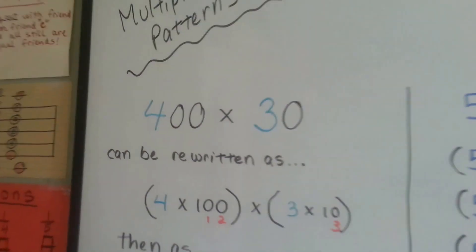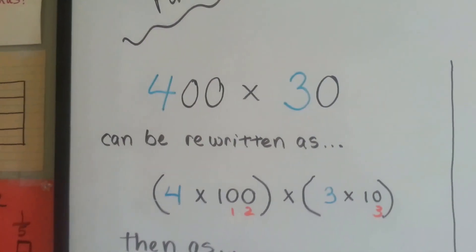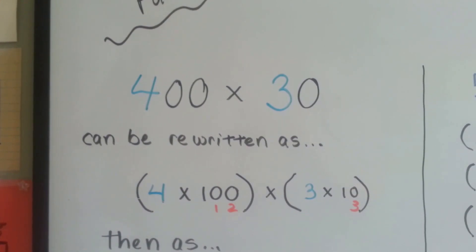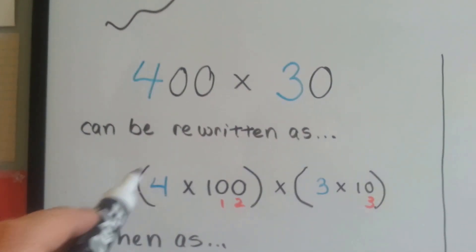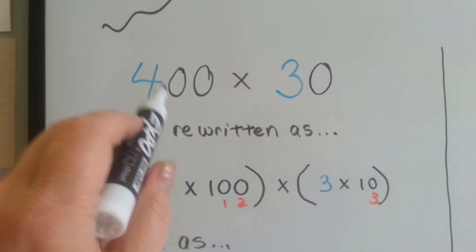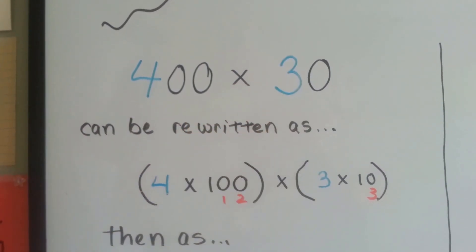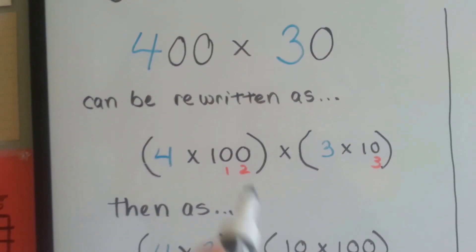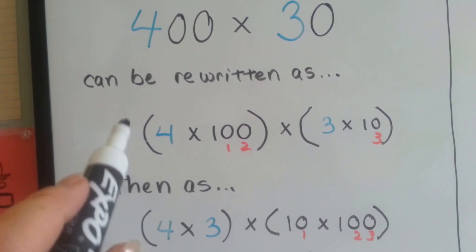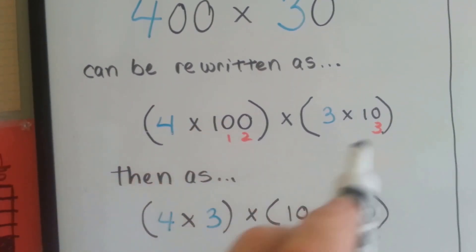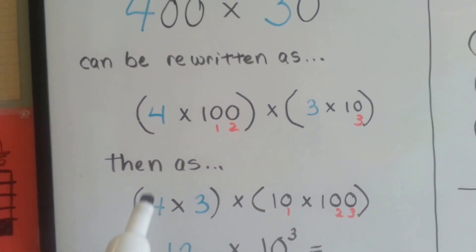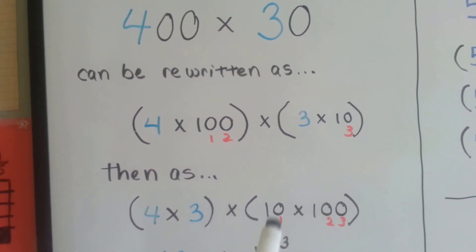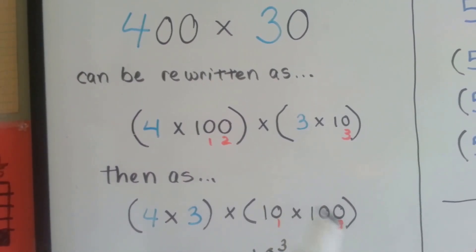Doesn't that give you a shortcut? Look at this. We have 400 times 30. It can be rewritten as 4 times 100, and 3 times 10. Then we group the 3 and the 4 together, and we group the 100 and the 10 together. So now we have 4 times 3 times 10 times 100.